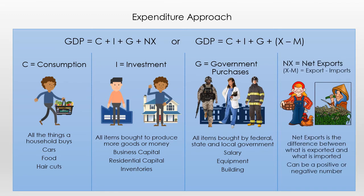Last, we have net exports — NX, or sometimes written as X minus M, which means exports minus imports. Net exports is the difference between your exports and your imports. This number can be positive or negative, and we often talk about whether imports are greater than exports or vice versa. Remember, it depends on where things are made. If Boeing makes airplanes in Asia, those won't count as a U.S. export. But if they produce them in the United States and sell them to Asia, that is considered an export.